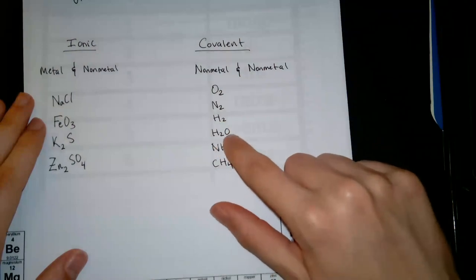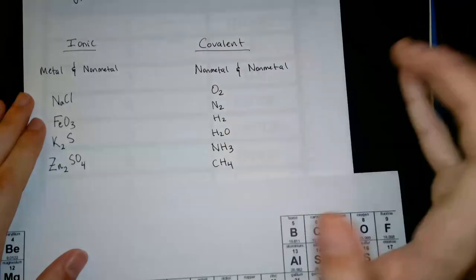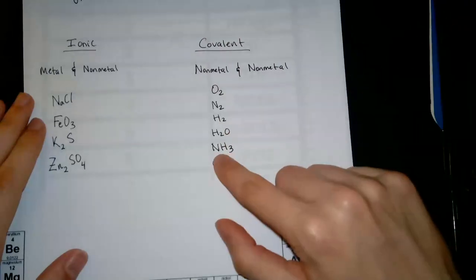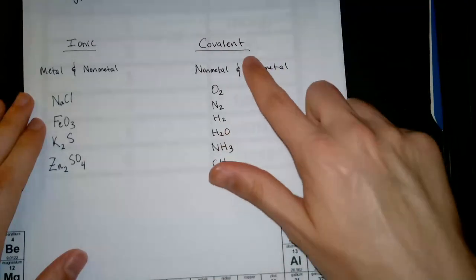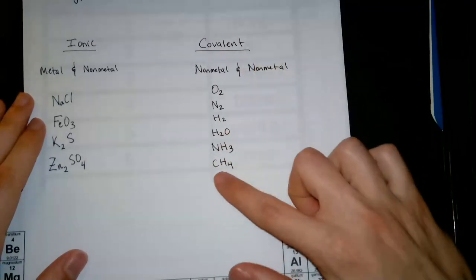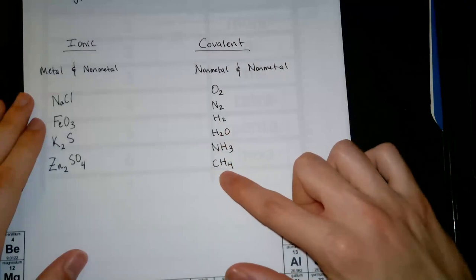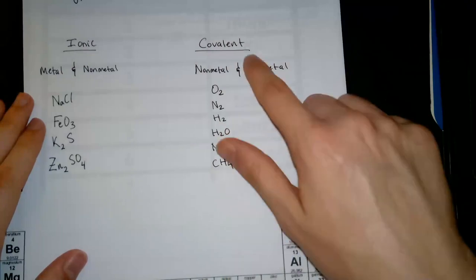Now H₂O, water. Non-metal, non-metal, non-metal. So it has to be covalent. And then we look at ammonia. We have nitrogen, non-metal, hydrogen, non-metal. So it has to be covalent. And then methane, carbon, hydrogen, two non-metals. It has to be covalent.